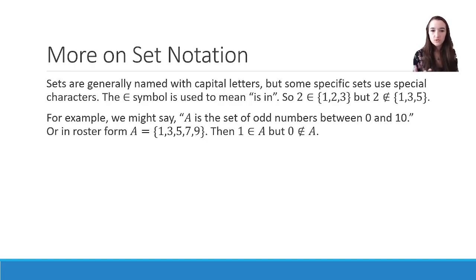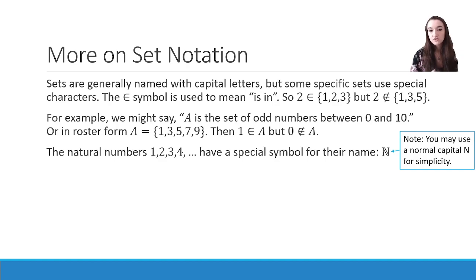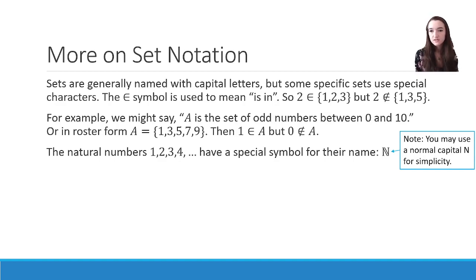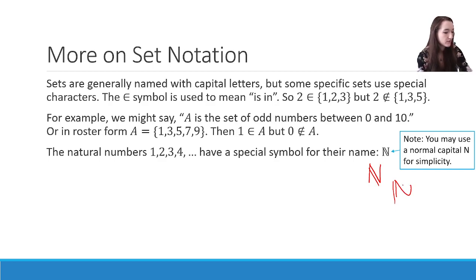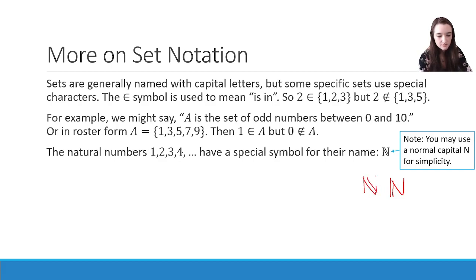Our first special character — the one we're going to see the most in this class — is the natural numbers. The natural numbers, which are 1, 2, 3, 4, and so on, have a special symbol that looks like an N with a second line in the middle. If you write just a normal capital N for simplicity, I'll understand what you're going for. I'll sometimes write it with a double line on the left side — the point is to make it look a little fancy. But we always call the natural numbers N.